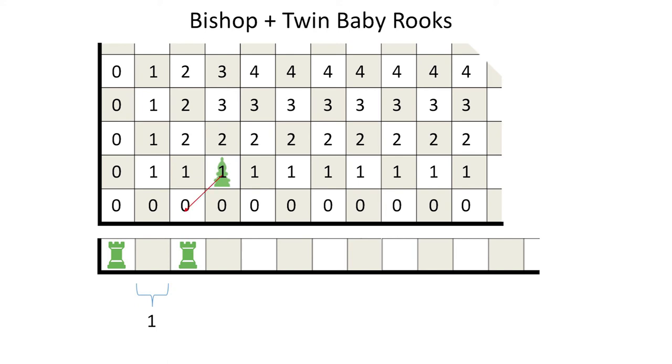Eventually, red must play one Grundy number to zero, and blue then wins by playing the other number to zero as well.